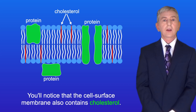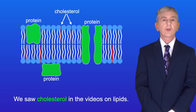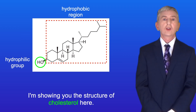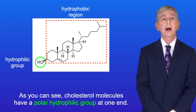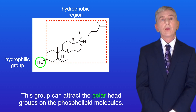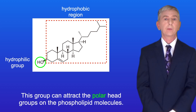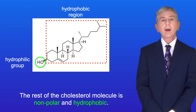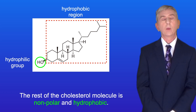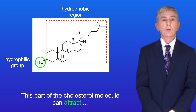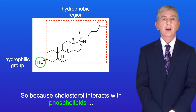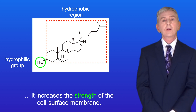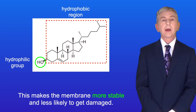The cell surface membrane also contains cholesterol. Cholesterol molecules have a polar hydrophilic group at one end, which can attract the polar head groups on the phospholipid molecules. The rest of the cholesterol molecule is non-polar and hydrophobic, and this part can attract the non-polar fatty acids in the phospholipids. Because cholesterol interacts with phospholipids, it increases the strength of the cell surface membrane, making it more stable and less likely to get damaged.